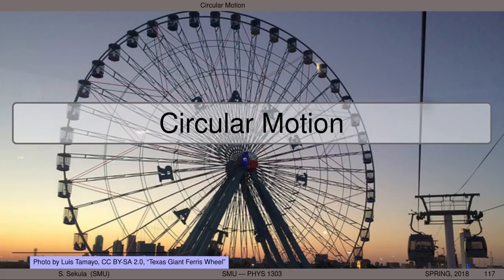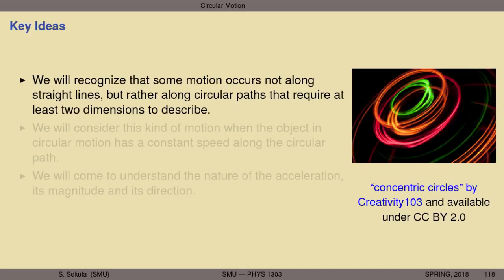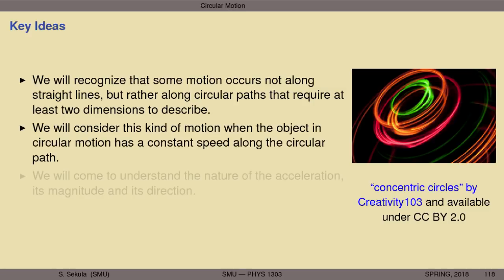Let's begin to explore the mathematical description of circular motion so that we can come to a deeper understanding of the interplay between speed and velocity, position, time, and acceleration. We're going to recognize that some motion occurs not along straight lines, but rather along circular paths that require at least two dimensions to describe. We will consider this kind of motion when the object in circular motion has a constant speed along the circular path — so at any moment, the speed is the same as the last time you asked.